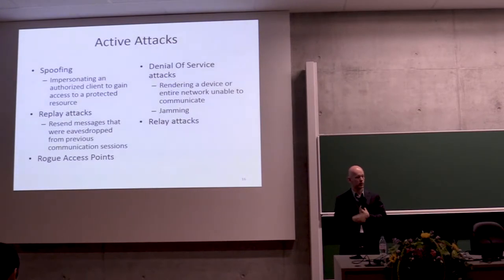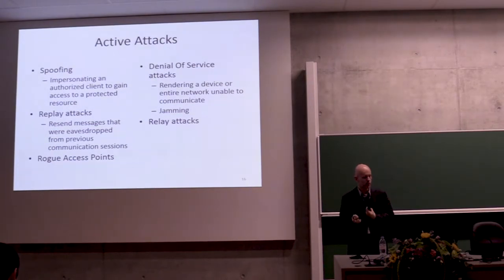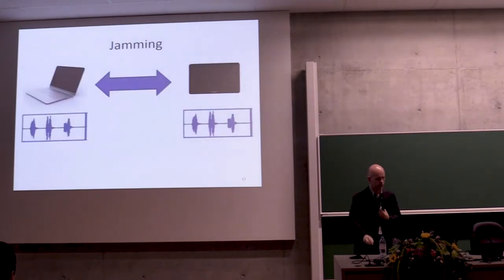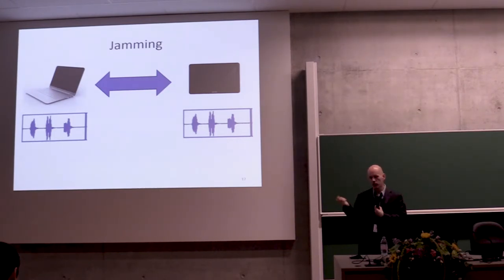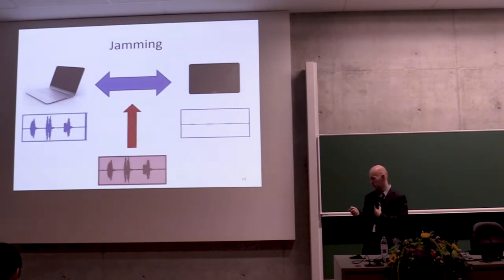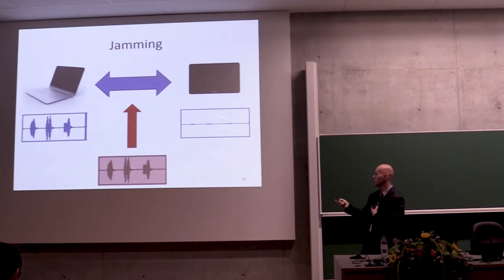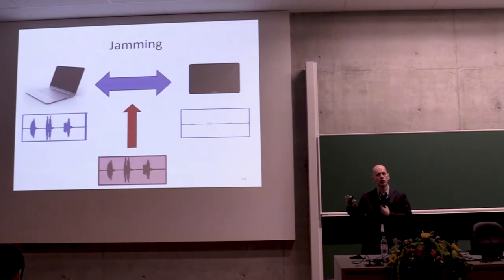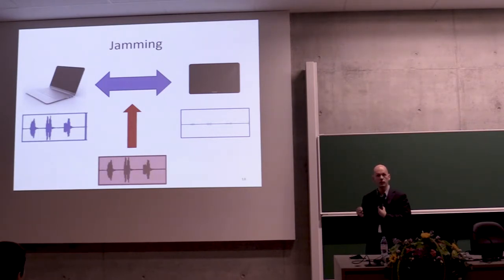Those were passive attacks, but there are also active attacks. One very specific to wireless is jamming. If two devices are communicating, an attacker can send a noise signal so that the receiver no longer receives the signal from the transmitter. This is easy to do if you know which frequencies the device is using and have enough power.